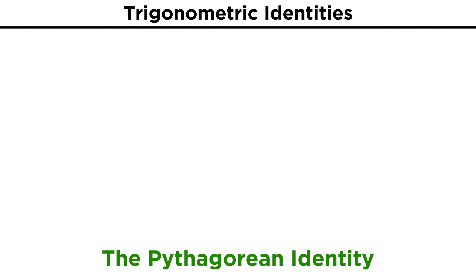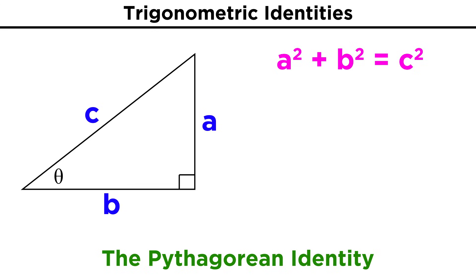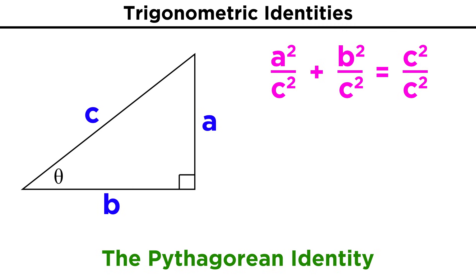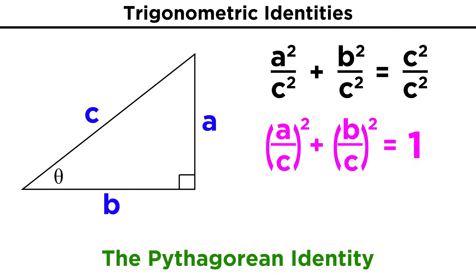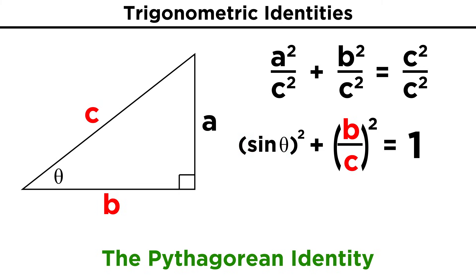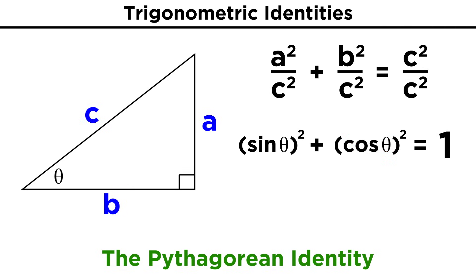There is another identity we must know: the Pythagorean identity. To derive this, let's start with the Pythagorean theorem that we already know. Now let's divide both sides by c squared. A squared over c squared is the same thing as the quantity A over C, squared, since exponents distribute over products and quotients. From here, we can recognize that A over C is the same as sine theta, because sine is opposite over hypotenuse. Similarly, B over C equals cosine theta, so we can rewrite this as sine squared theta plus cosine squared theta equals one.